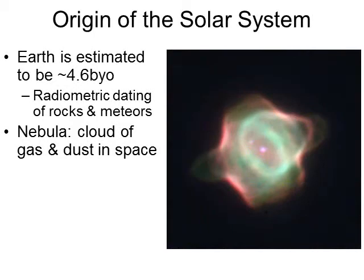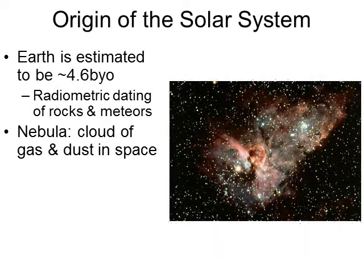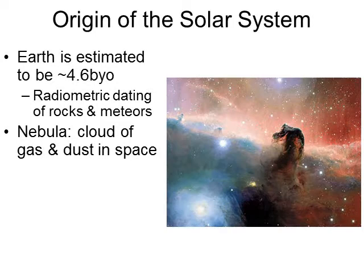Here are just a few pictures of various nebulae. For rock and roll fans, this one was the album art of a Pearl Jam album in the mid-90s — this is called the Fish Eye Nebula, because it looks like a fish eye in the middle. And this is also one of my favorites — this is called the Horse Head Nebula. If you use your imagination, you can kind of see a horse head in that cloud of gas and dust.